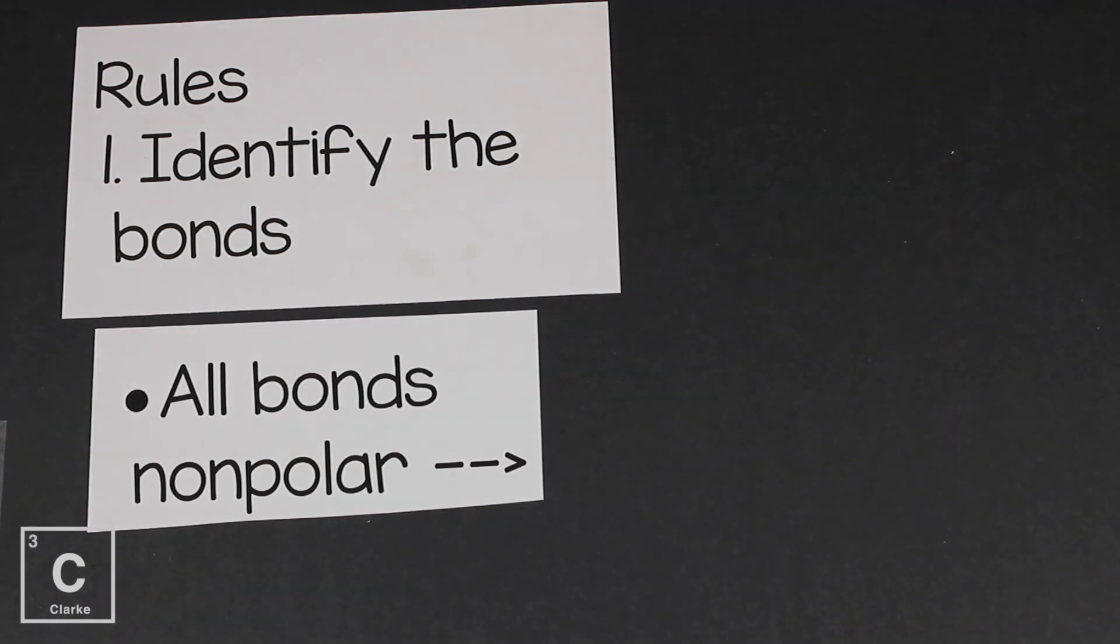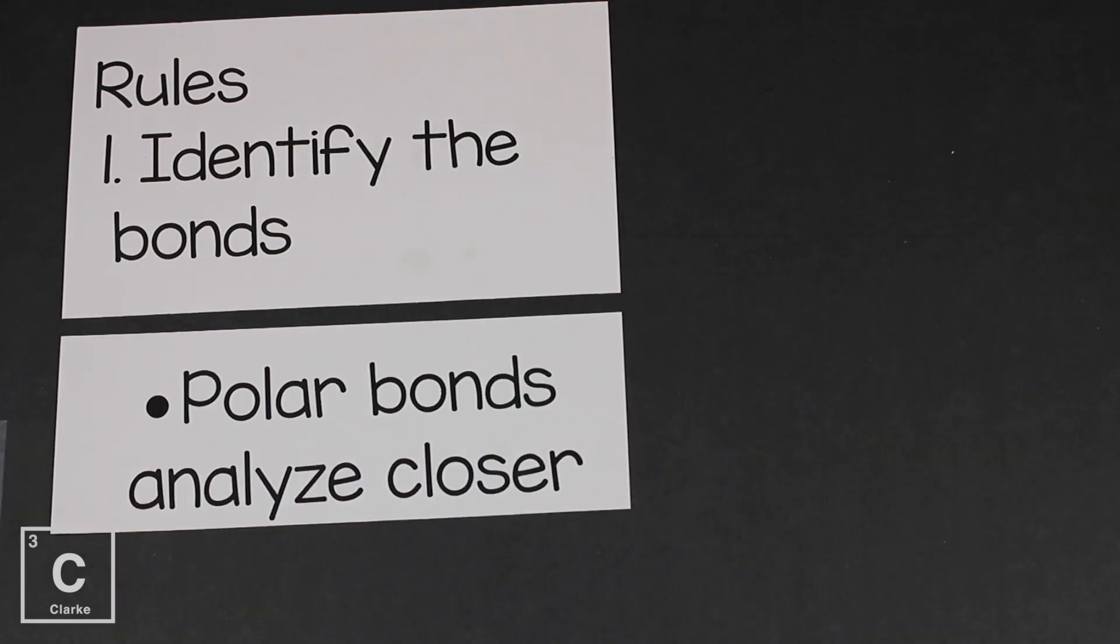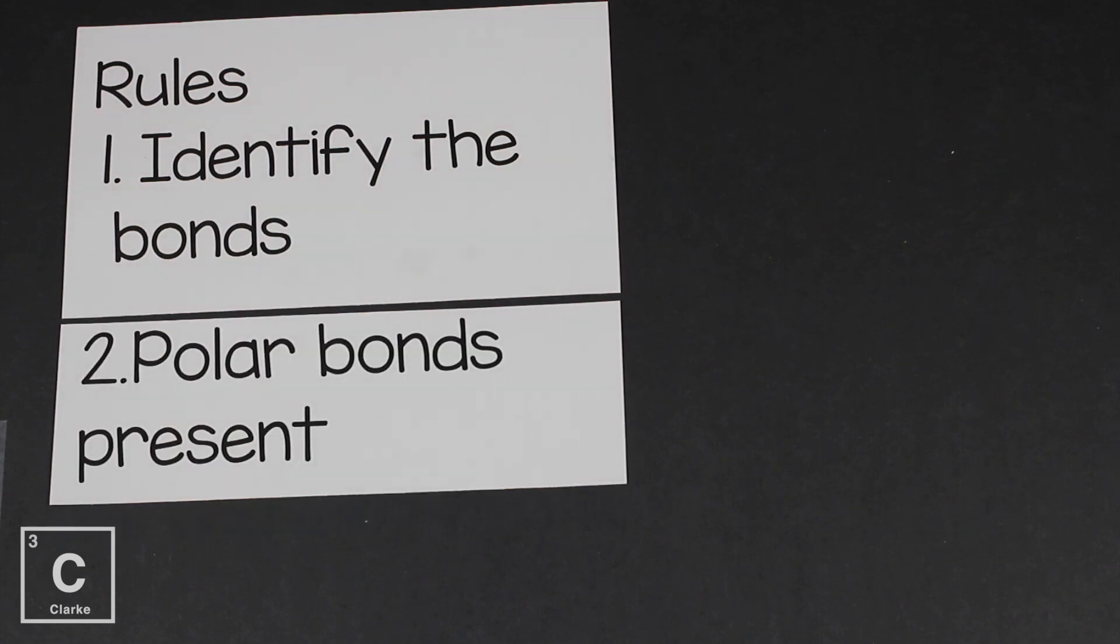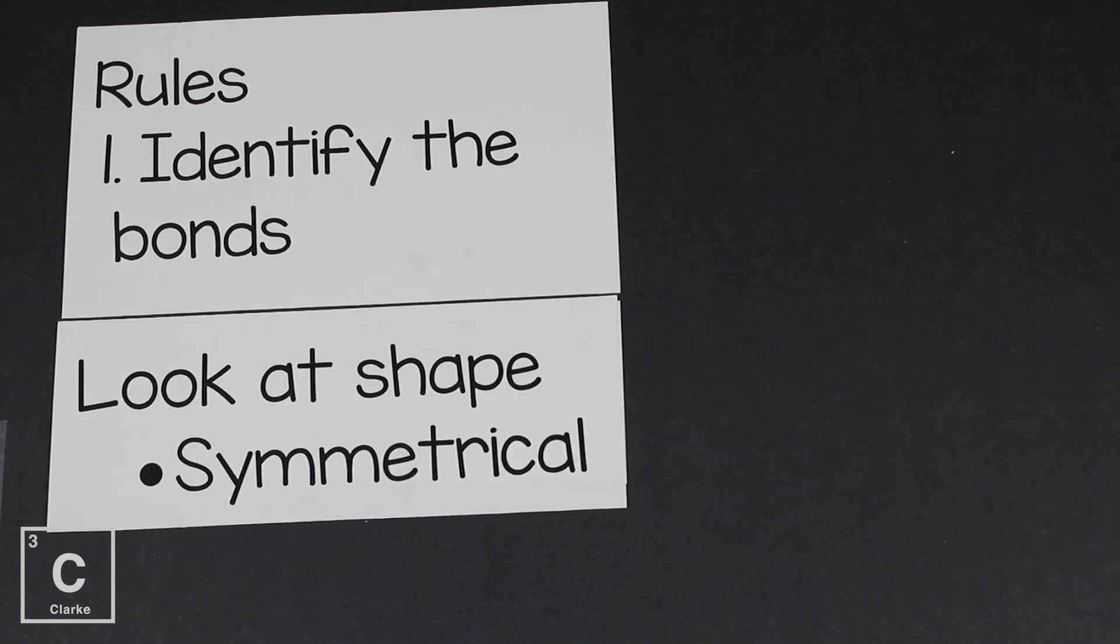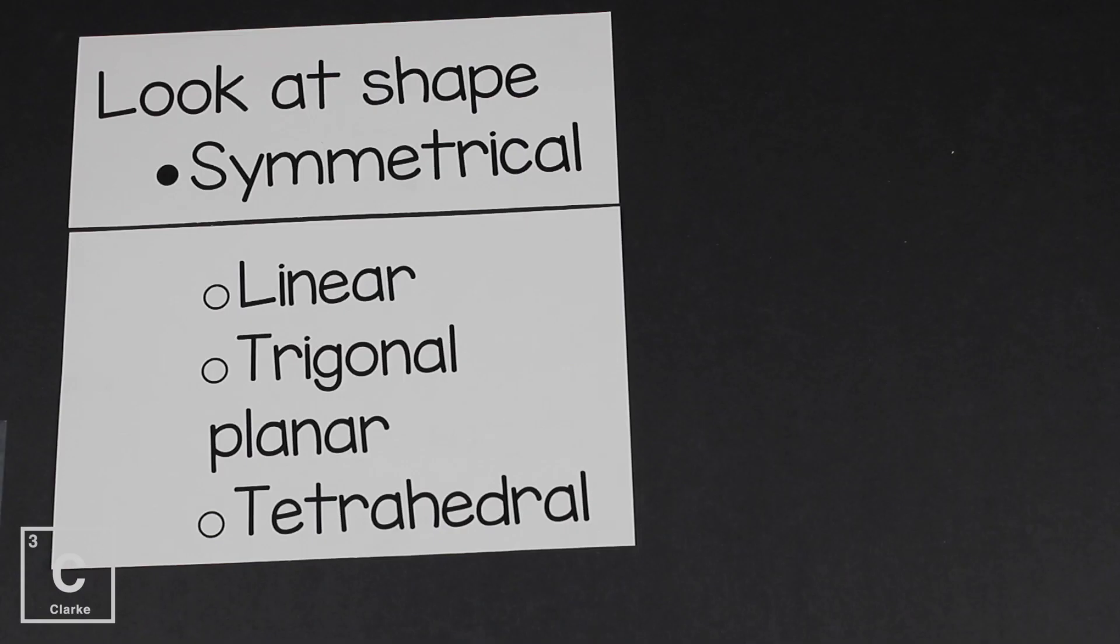So let's look at some rules. If all of the bonds are nonpolar, that's going to be a nonpolar molecule. If we've got some polar bonds in our molecule, we need to analyze this a little bit closer. So we've already determined we've got polar bonds present. The next thing we got to do is look at the shape. When we look at the shape, we need to decide if the shape is symmetrical or not. These are the shapes that are considered to be symmetrical.